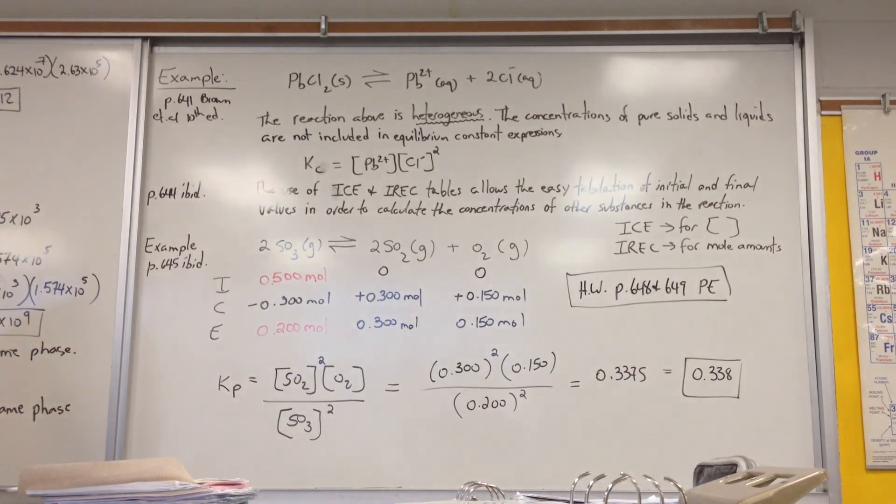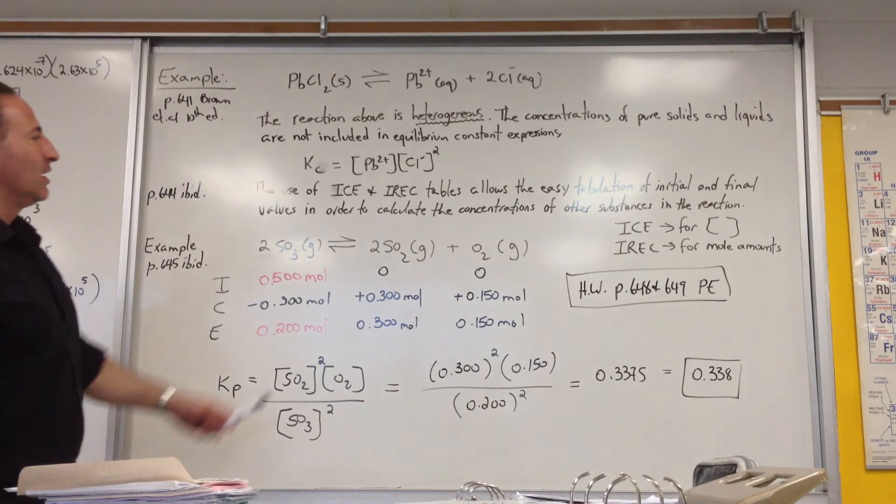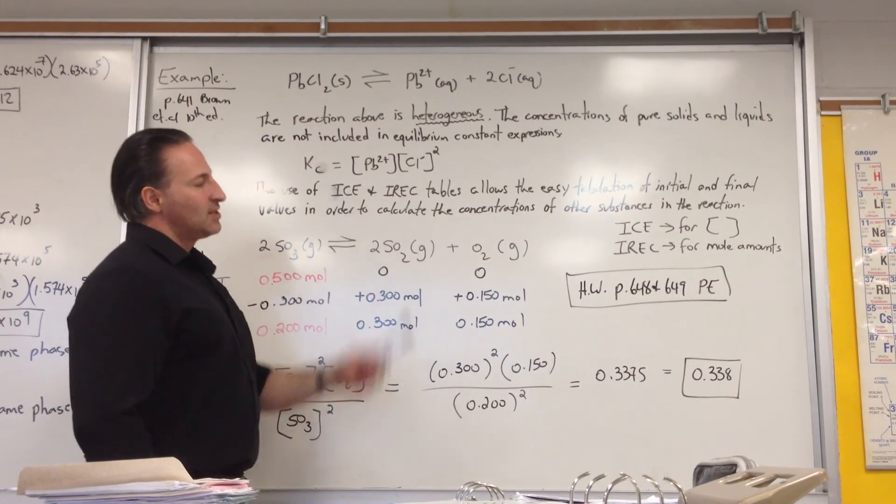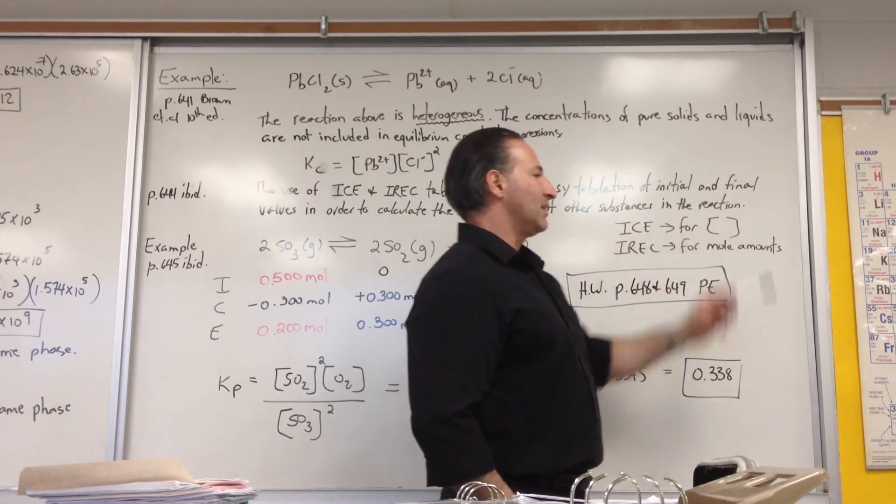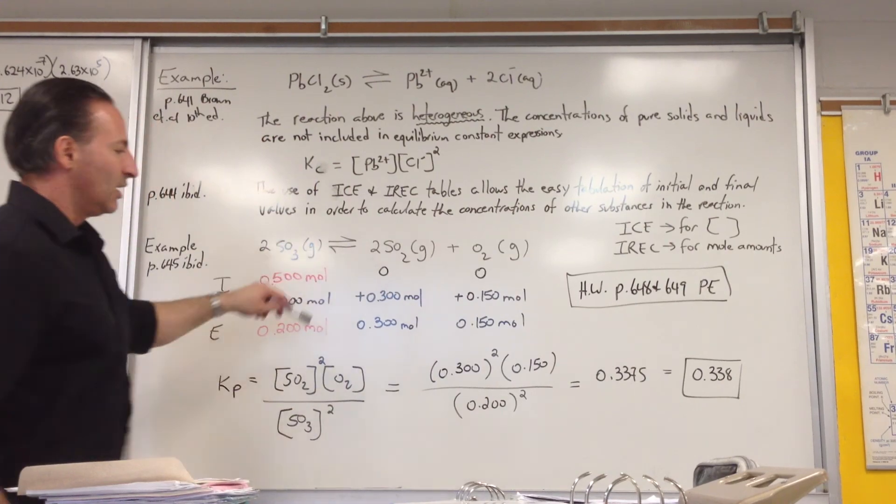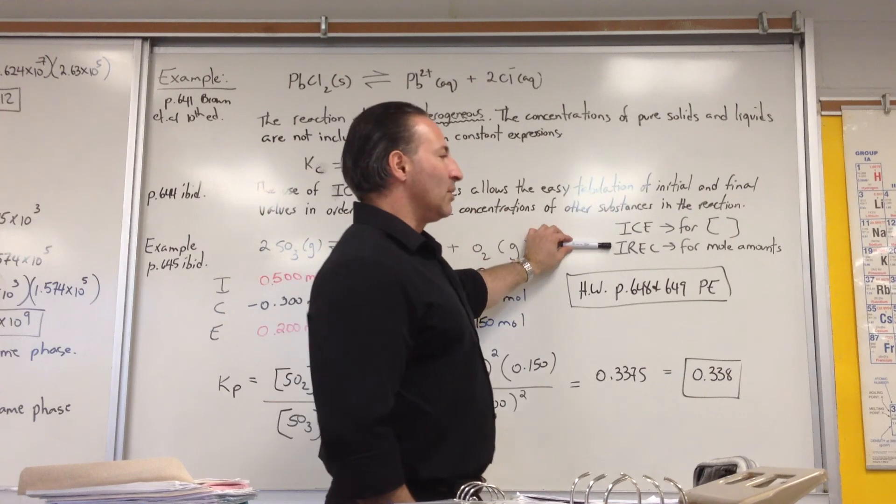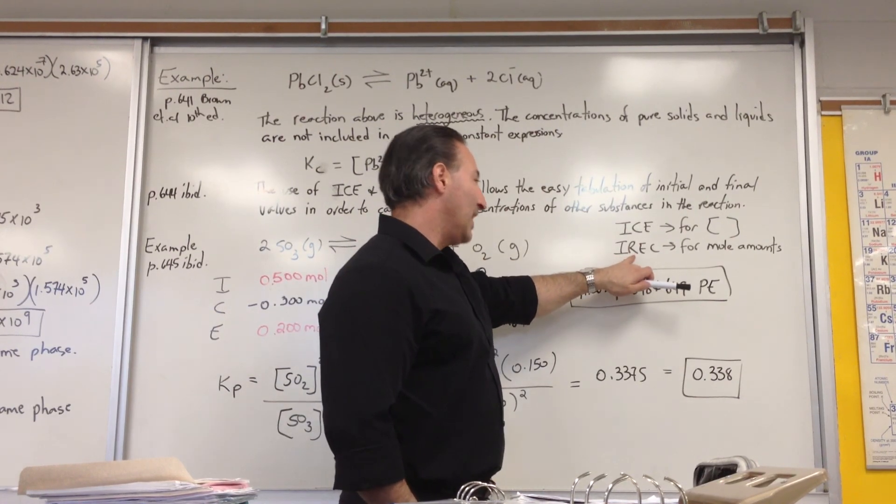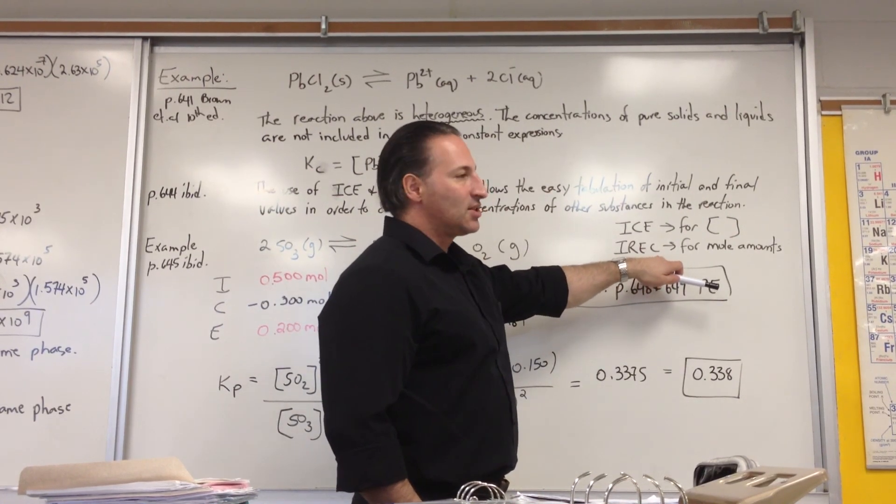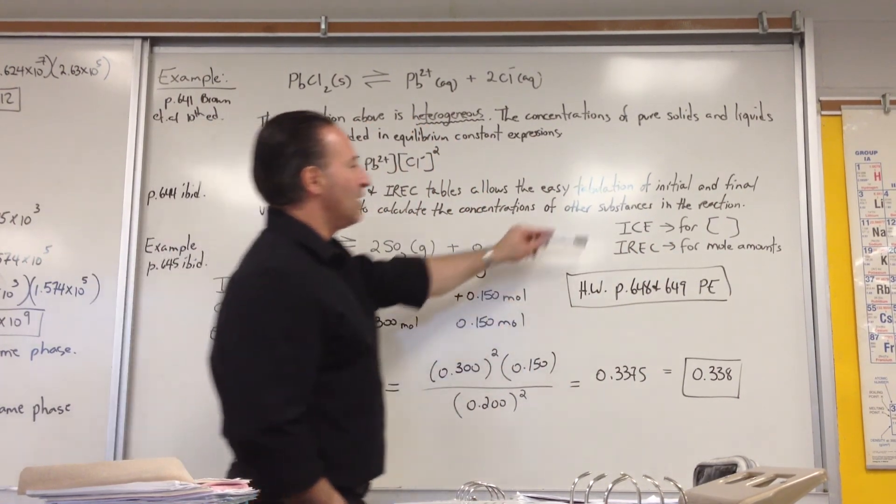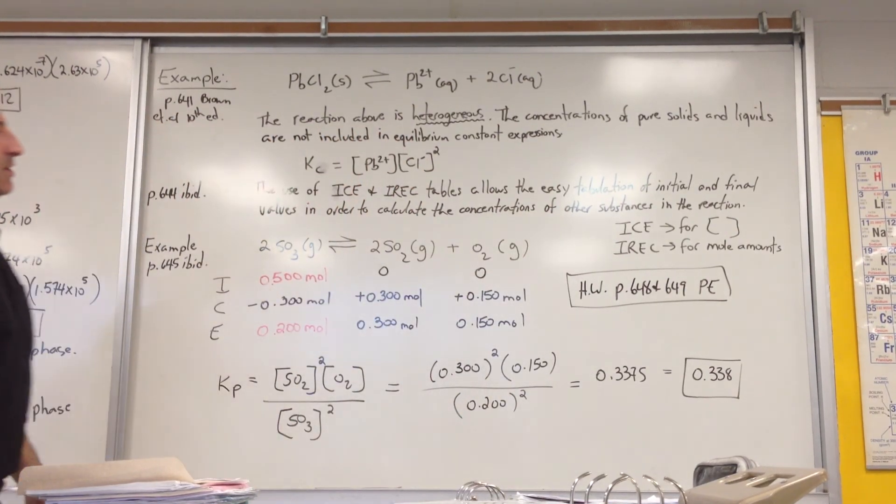Which brings us to the next subject matter, which is the use of ICE and IREC tables. ICE is an acronym for initial, change, equilibrium. Use an ICE table when the concentrations of the reactants are given, and then you want to calculate the other ones. You would use an IREC table for when they give you mole amounts, and it gives you one additional step: initial, reacting, equilibrium, concentration. And to find the concentration, you need the volume of the reacting vessels. So ICE and IREC tables are both useful depending on how the problem is set up.